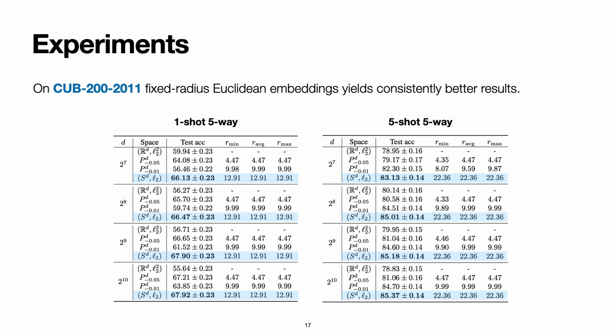one-shot five-way and five-shot five-way following the literature. In this slide, I present the results for the Burst dataset, where we consider different manifold dimensions and three architectures.